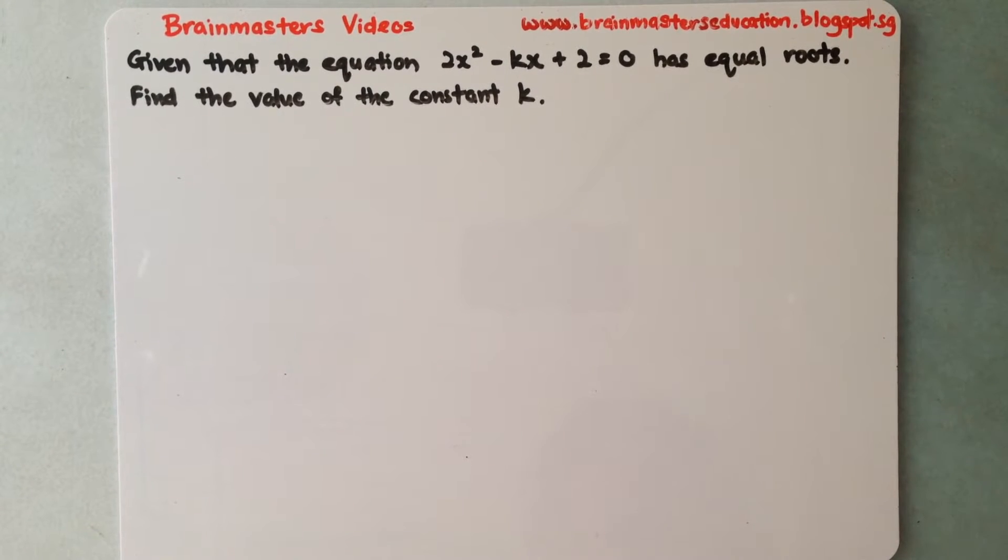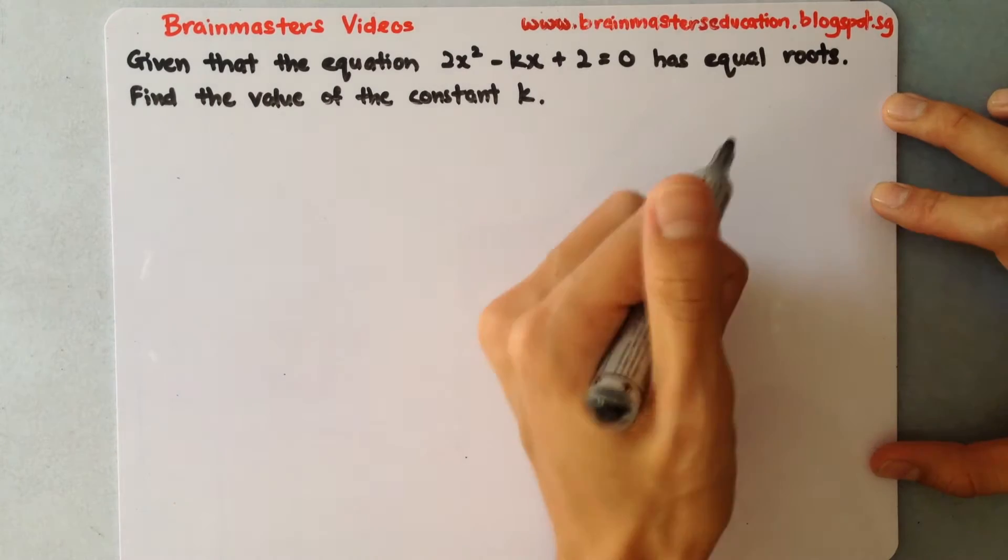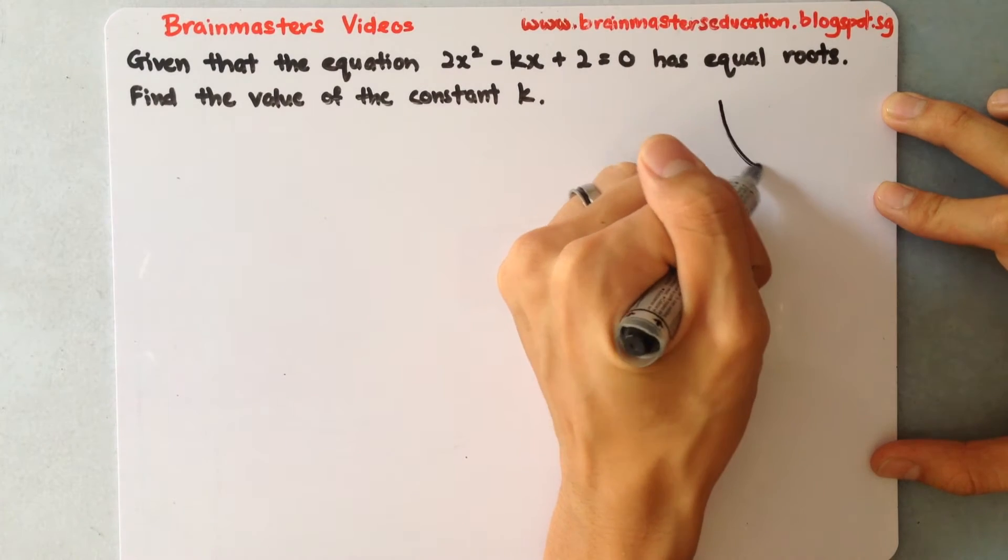Welcome to Brainmaster's videos. Today I'll be doing quadratic equations, nature of roots for real and equal roots. So this is the question. Given that the equation 2x squared minus kx plus 2 equals 0 has equal roots, find the value of the constant k. It was stated that it's equal roots, so this equation will actually touch at only one point.